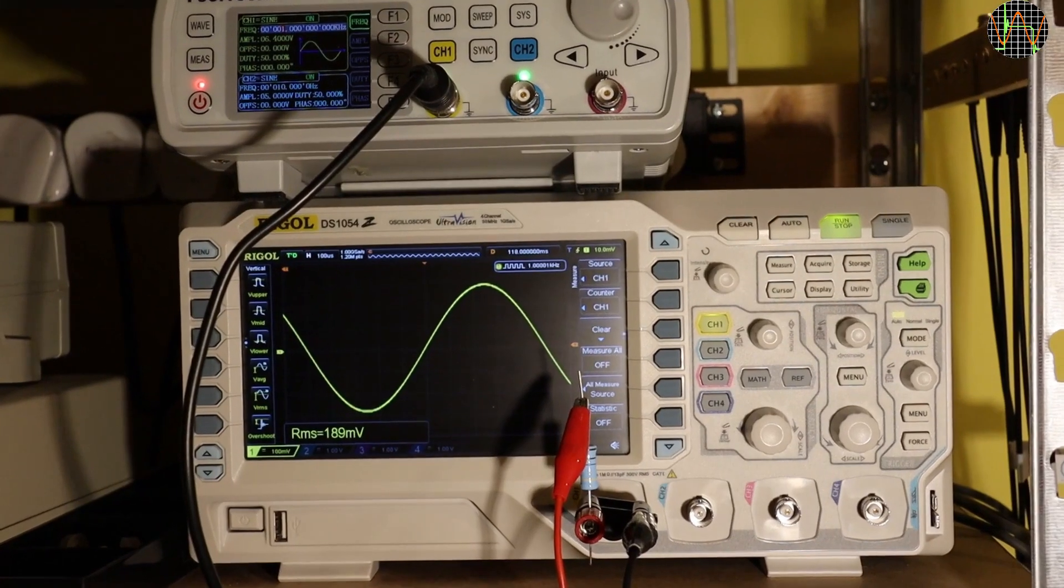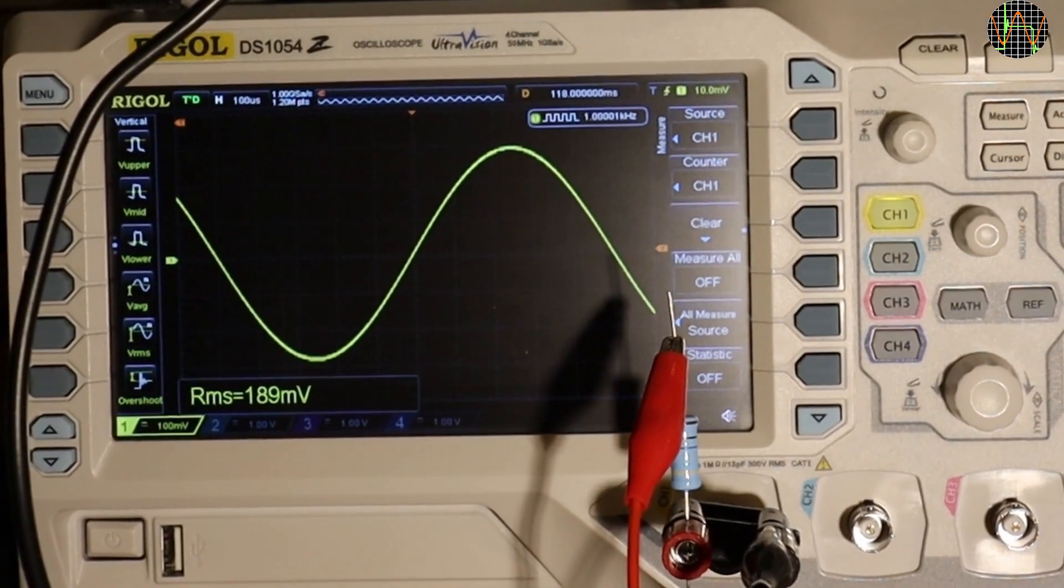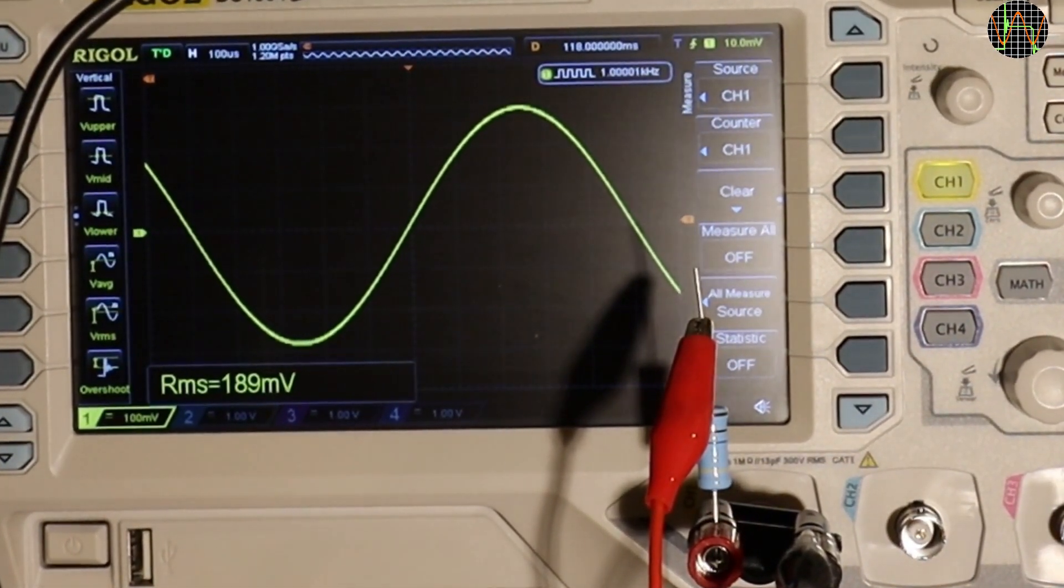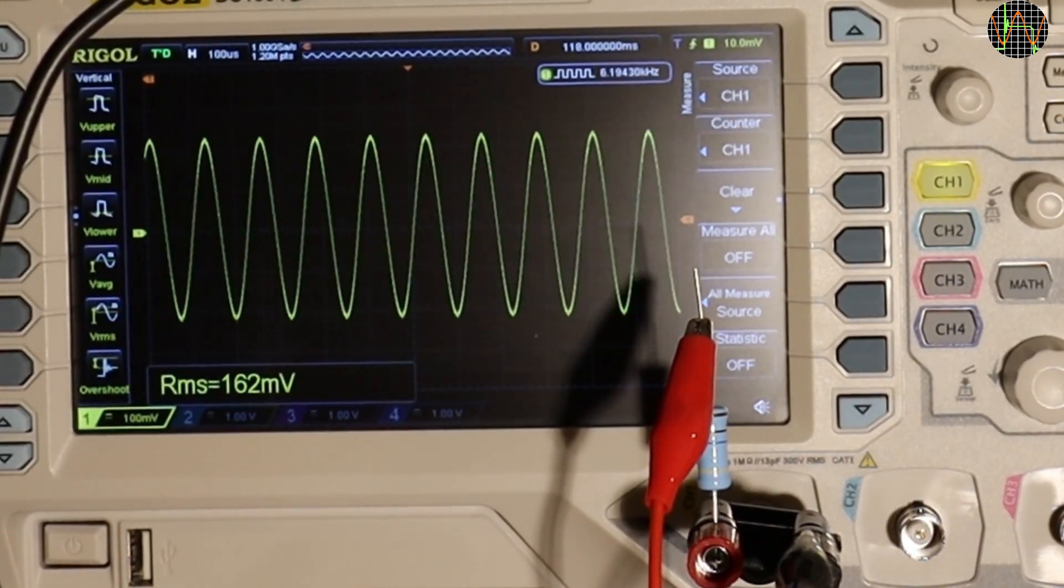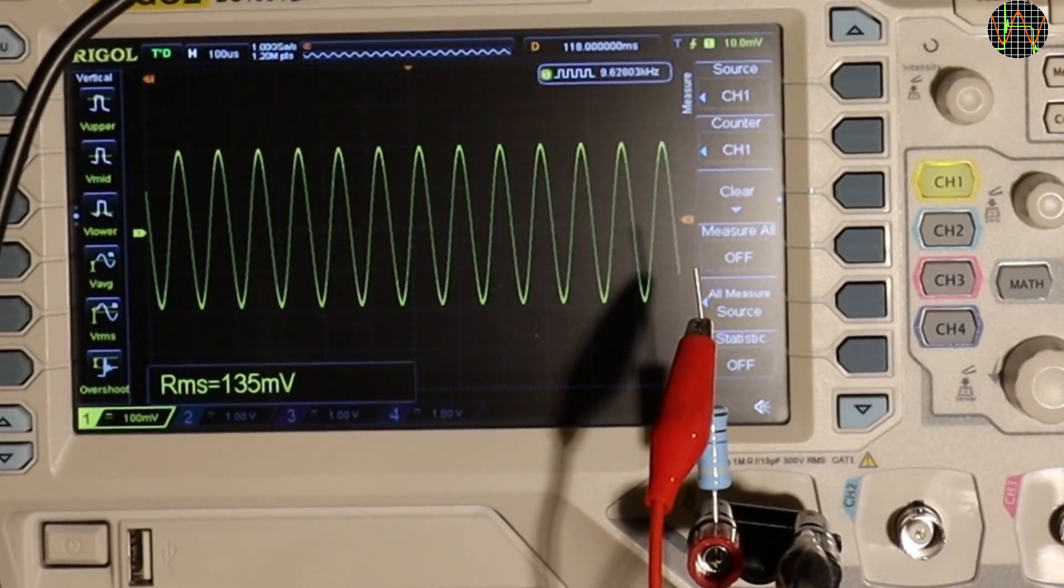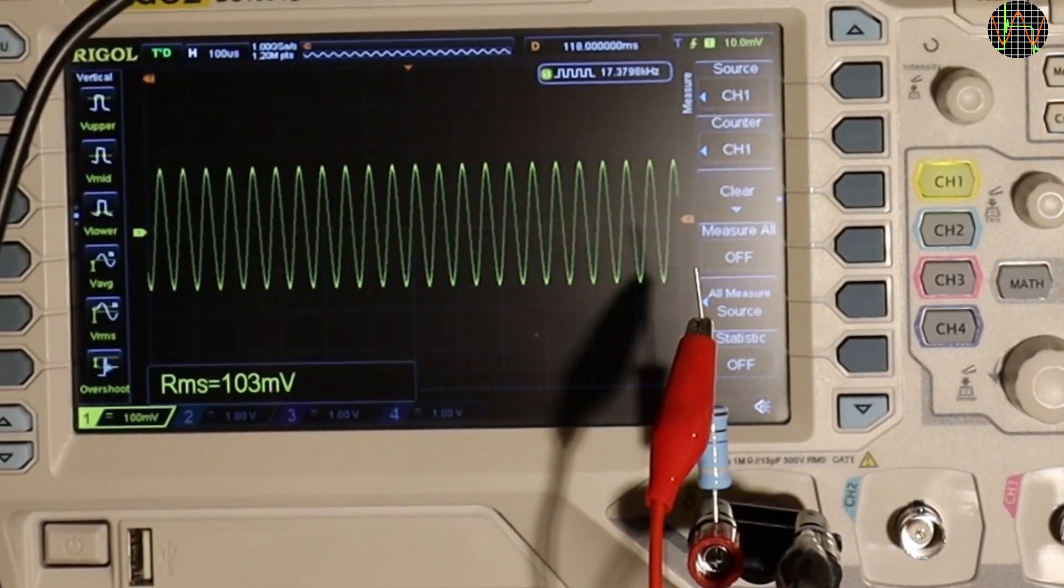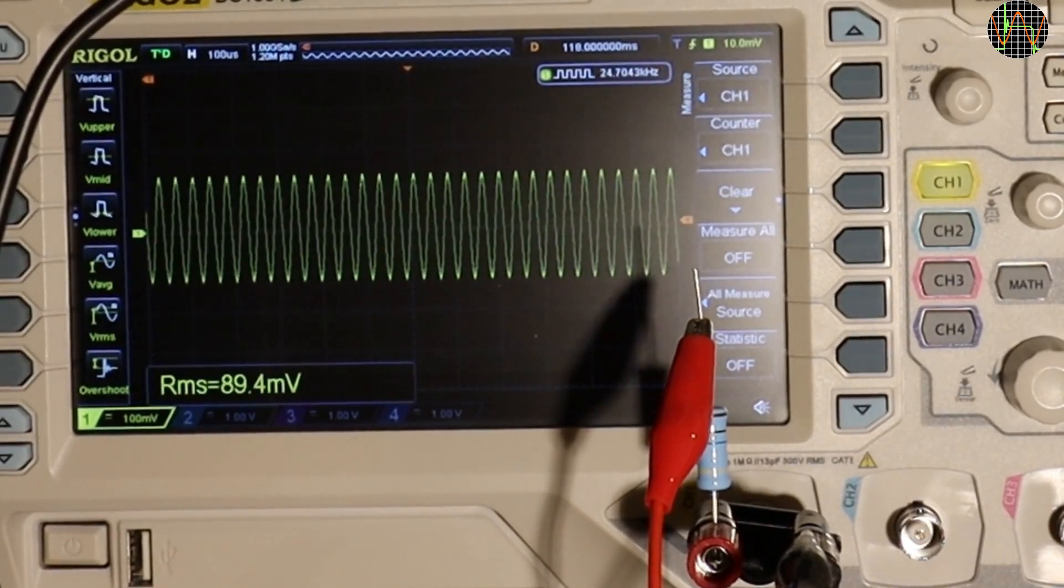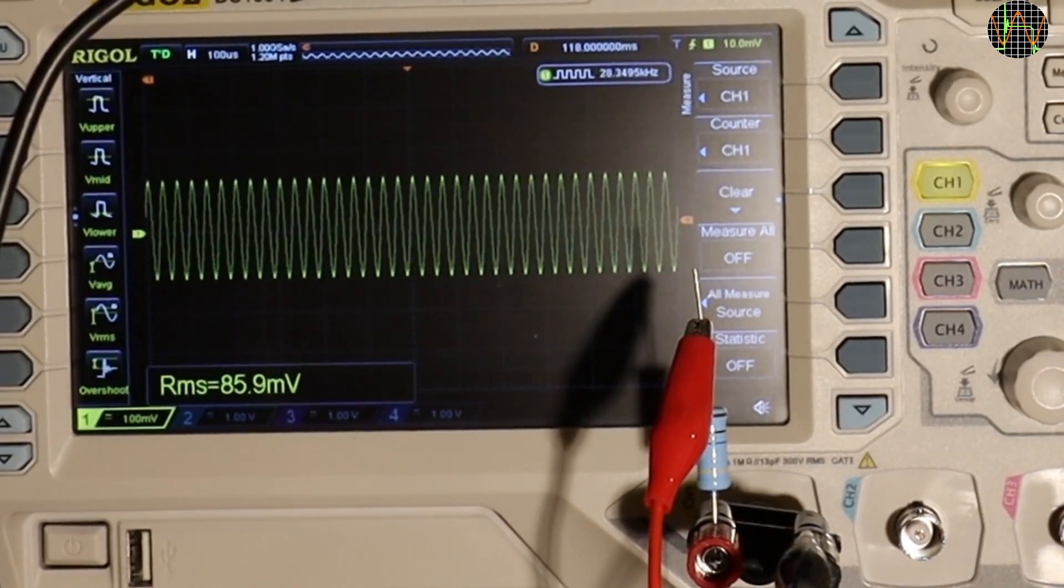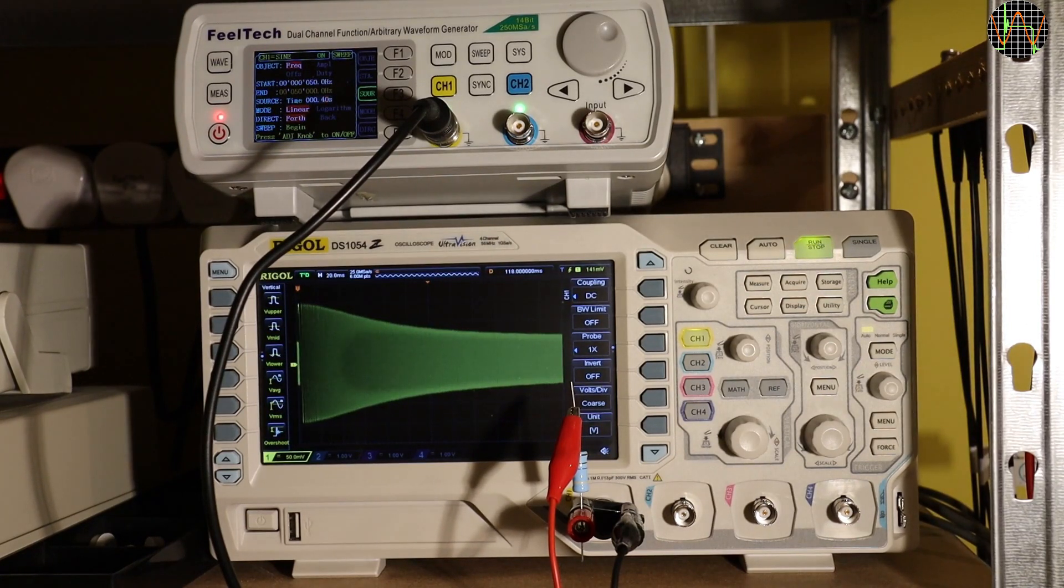You can see one of the large 10MΩ resistors I am going to use in the input for the scope channel 1 and the generator's connected on the other end with a red alligator clip. If you keep an eye on the RMS value on the lower left on the scope screen and the frequency counter on the upper right while I am increasing the frequency, you can see the RC low pass with the internal scope capacitance in action. The initial value has dropped more than half and we are just at 32kHz. Just for fun, I set up the generator to do a sweep from 50Hz to 30kHz so you can see the drop in amplitude directly on the screen.